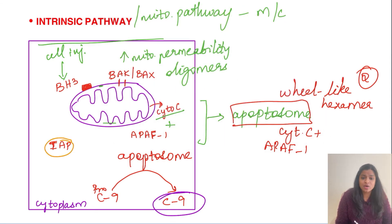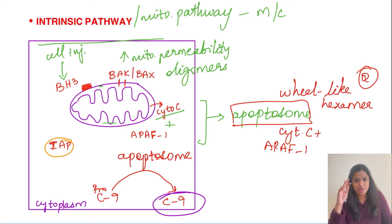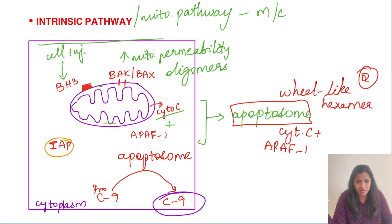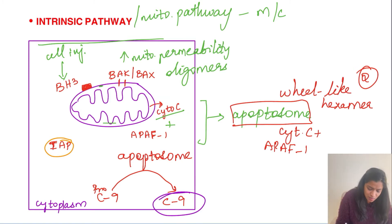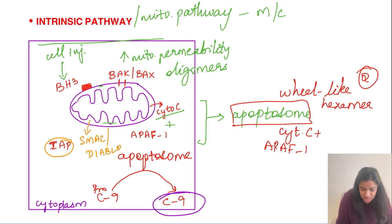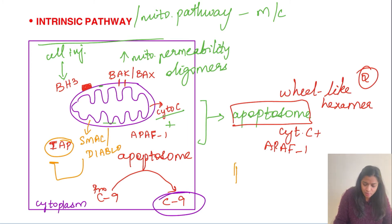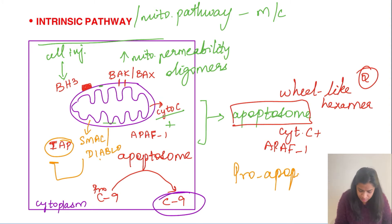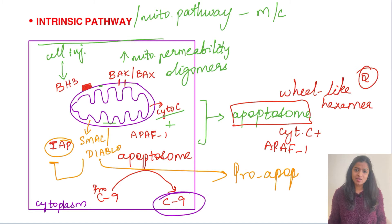Normally the cell has a cytoplasmic protein called IAP — Inhibitor of Apoptosis — which keeps caspases inactive and prevents apoptosis. When cell stress activates the mitochondrial pathway, this IAP must be inhibited. Along with cytochrome C, a complex called SMAC/DIABLO is also released from the mitochondria. SMAC/DIABLO is pro-apoptotic because it inhibits IAP, thereby allowing the apoptotic pathway to proceed.